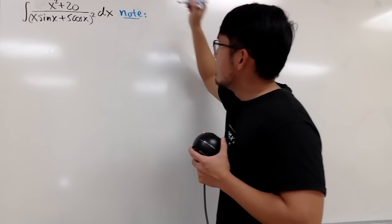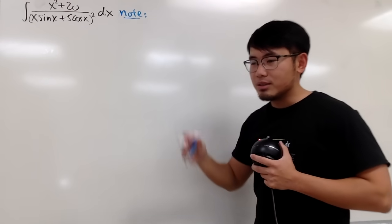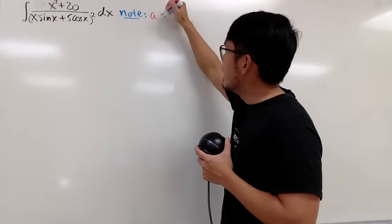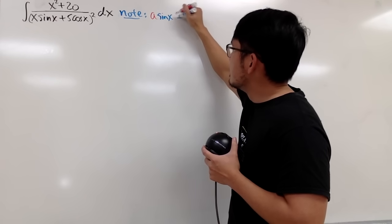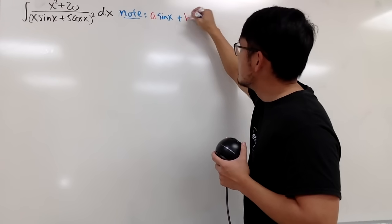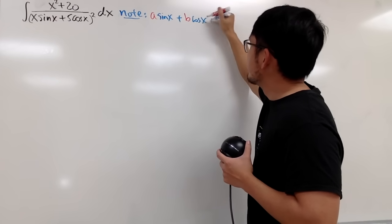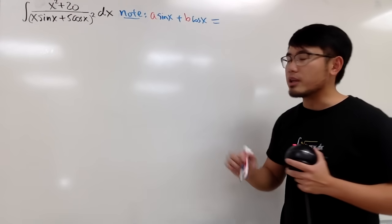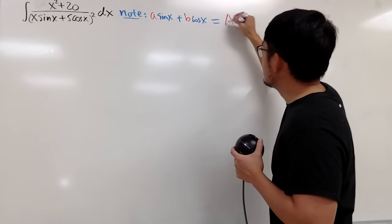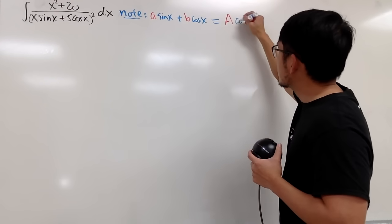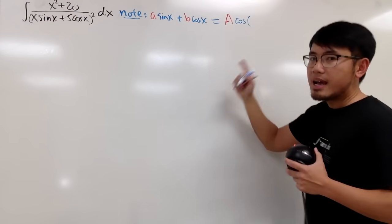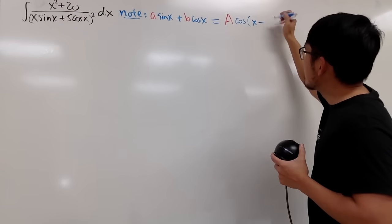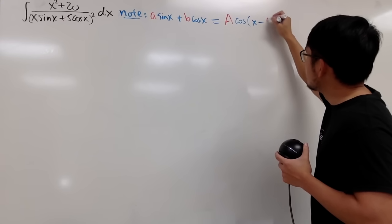This is called the Harmonic Addition Theorem. Here is the statement: when you have a·sin(x) plus b·cos(x), you can combine this into just one cosine function with a capital A in front — cosine of (x minus an angle phi).